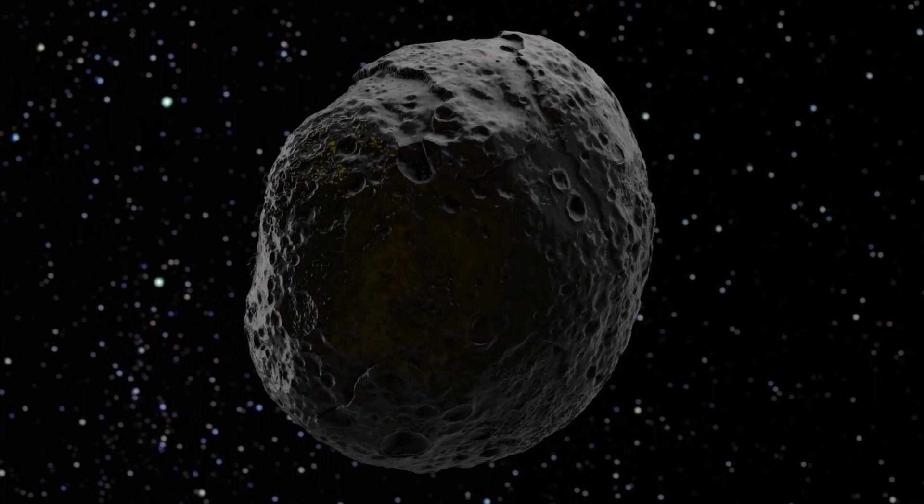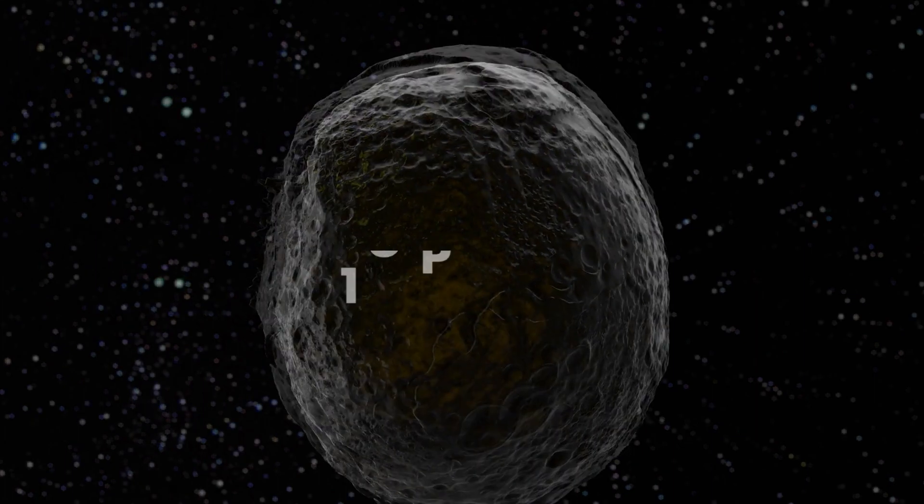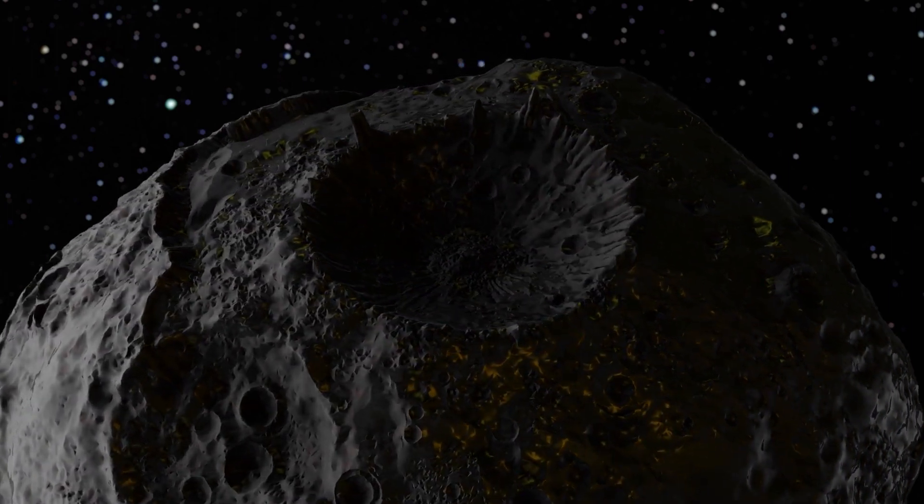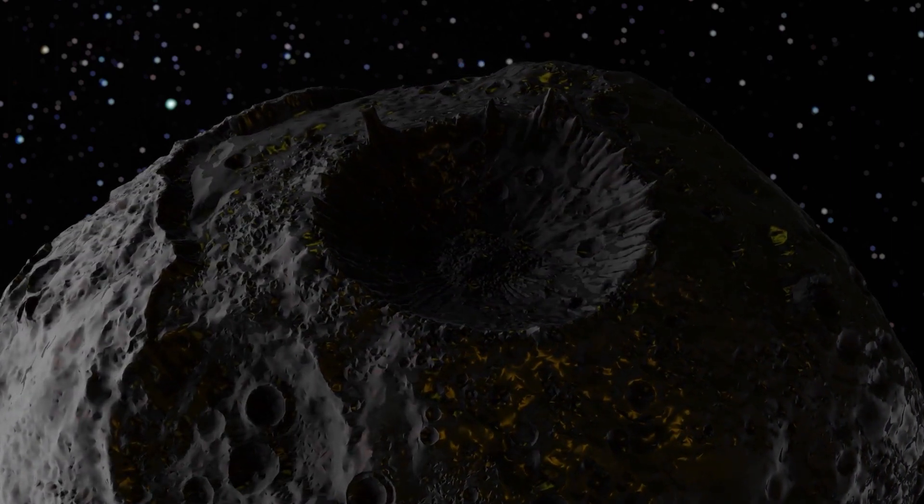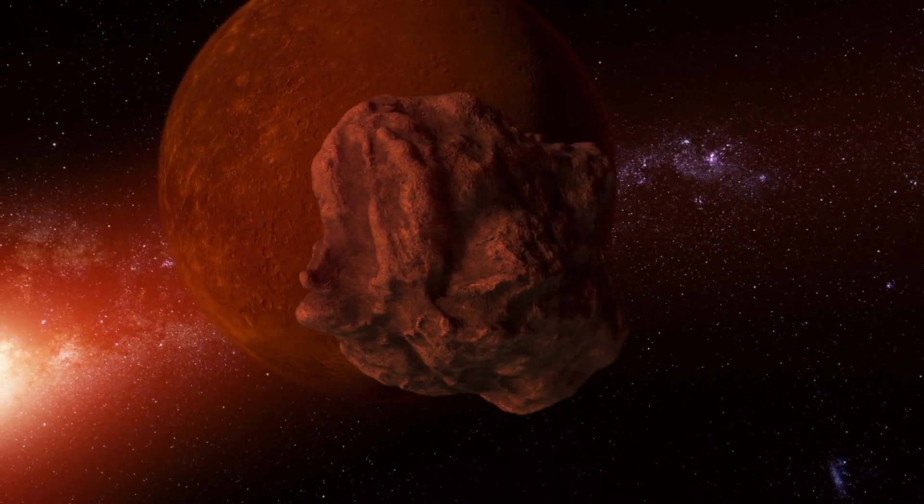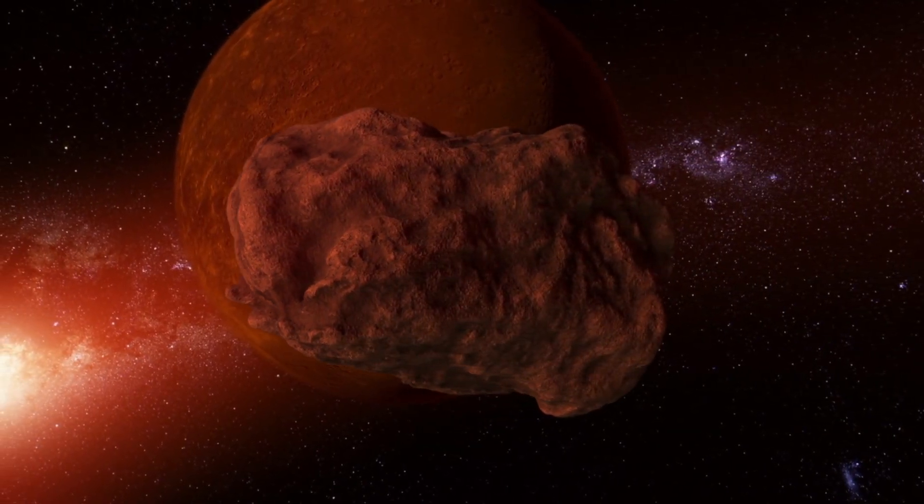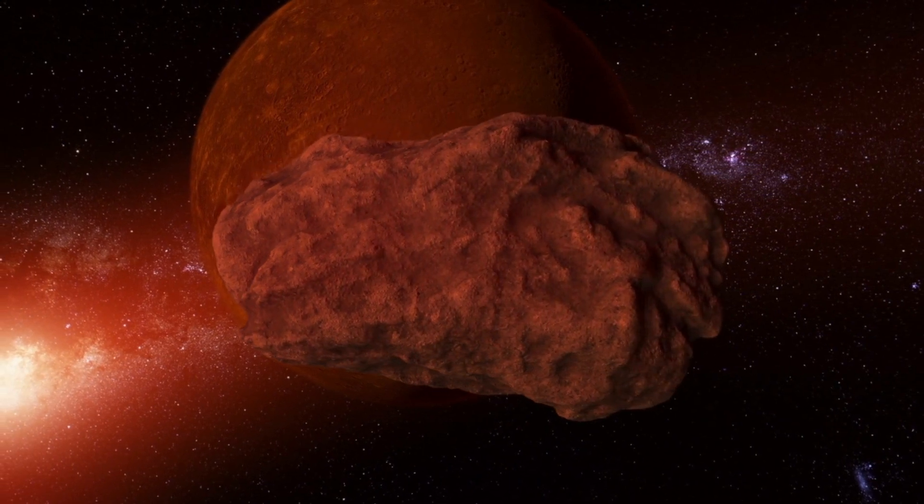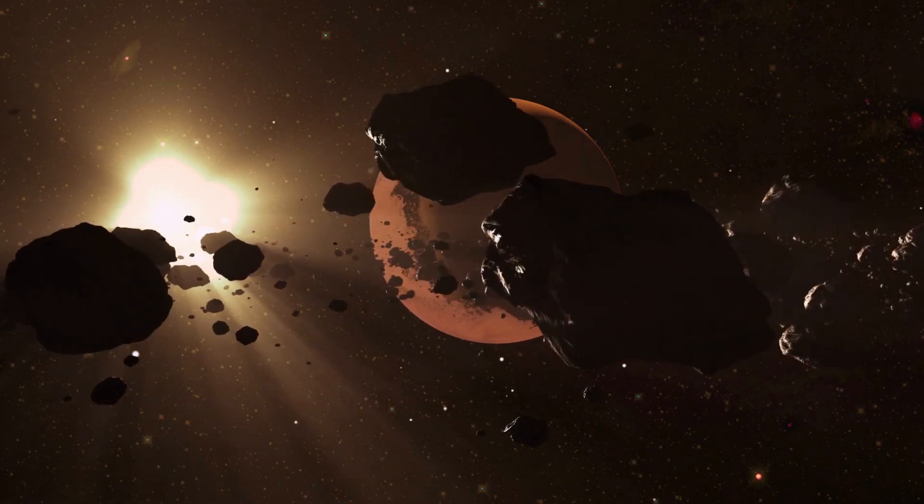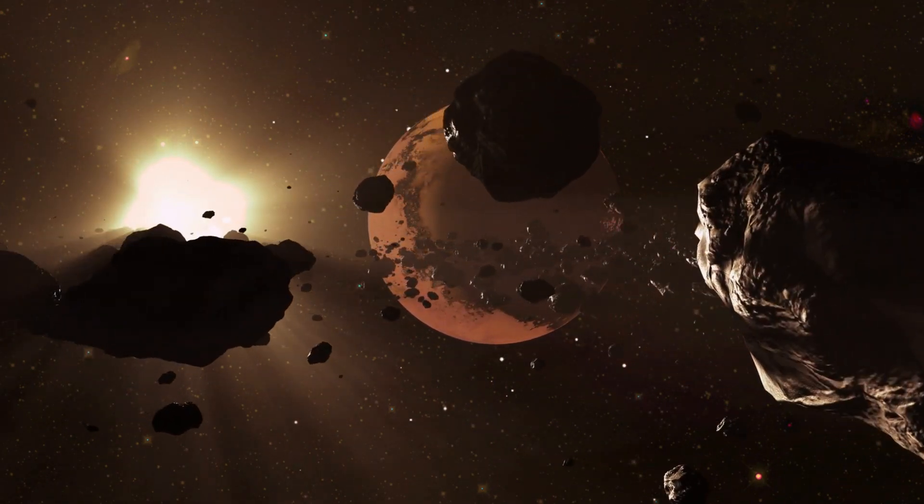Interestingly, launching a spacecraft to the asteroid 16 Psyche could provide more information about the Earth's core. Psyche is thought to be an ancient, undeveloped iron body that could have become the core of an ancient planet. By studying Psyche's structure, composition, and formation history, scientists could gain insight into what happened to the Earth a long time ago and why it is habitable, while other planets like Mars, Venus, and Mercury are not.